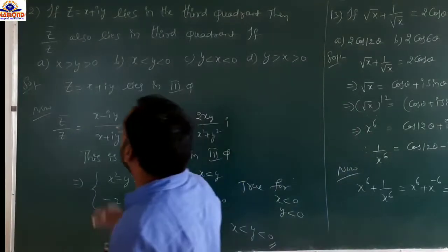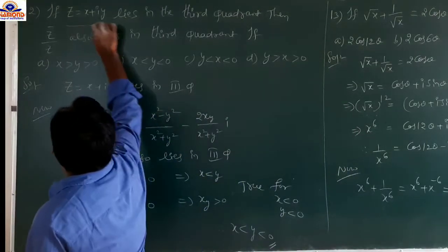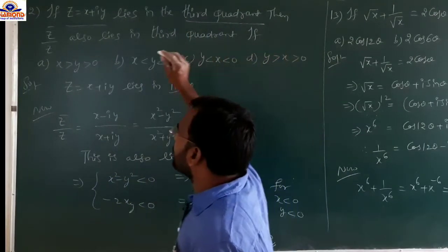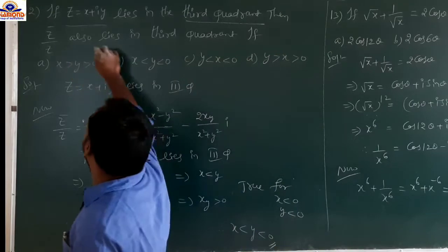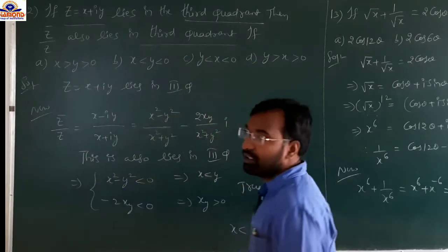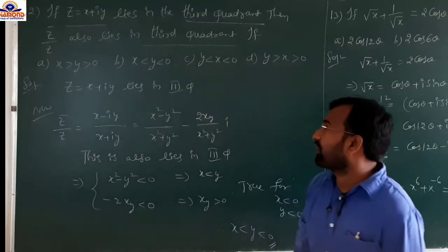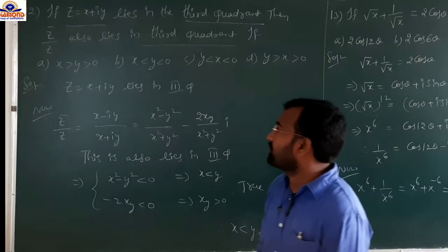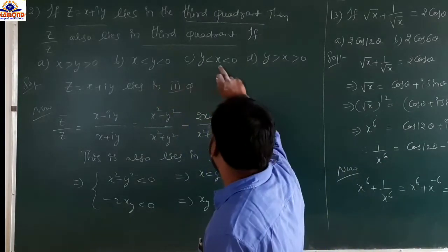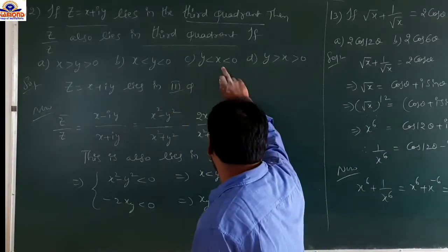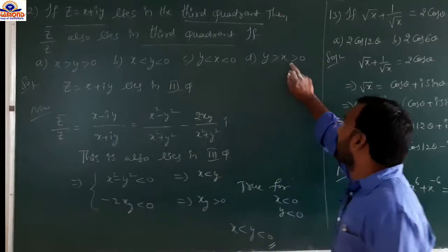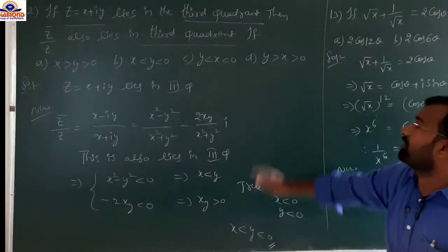If z equals x+iy lies in the third quadrant, then z̄/z also lies in the third quadrant if: option A x>y>0, option B x<y<0, option C y<x<0, option D y>x>0. In the third quadrant, x is negative and y is negative.